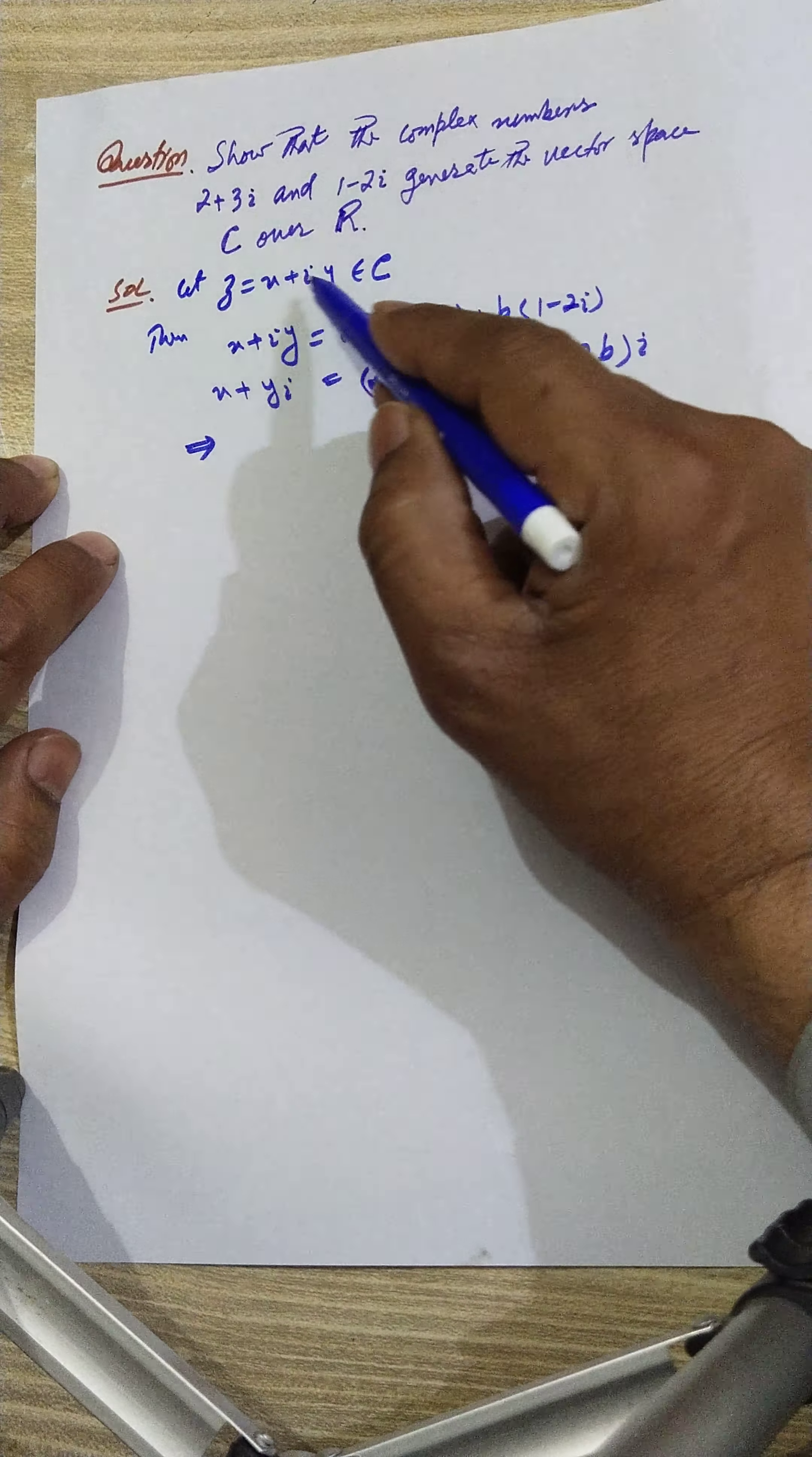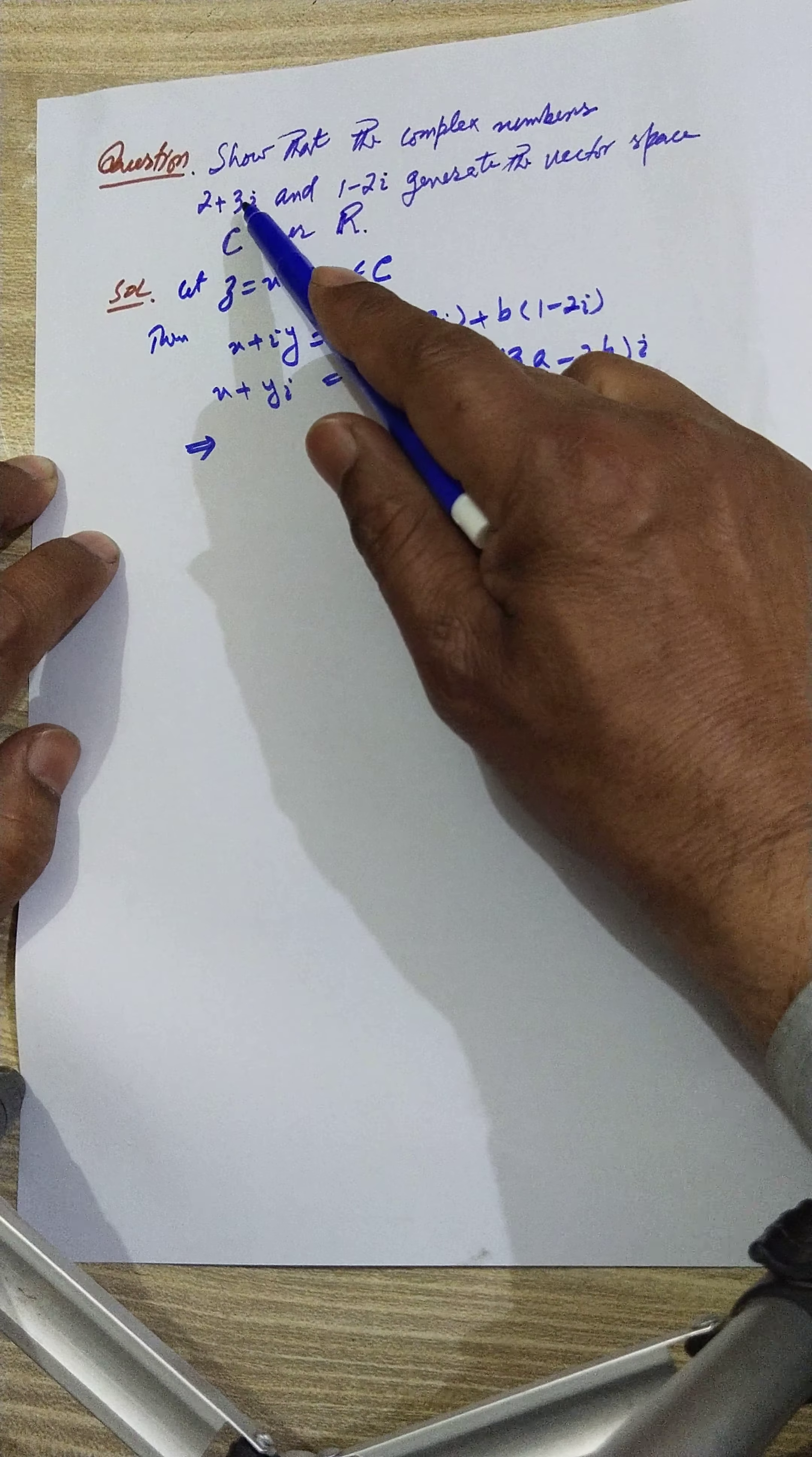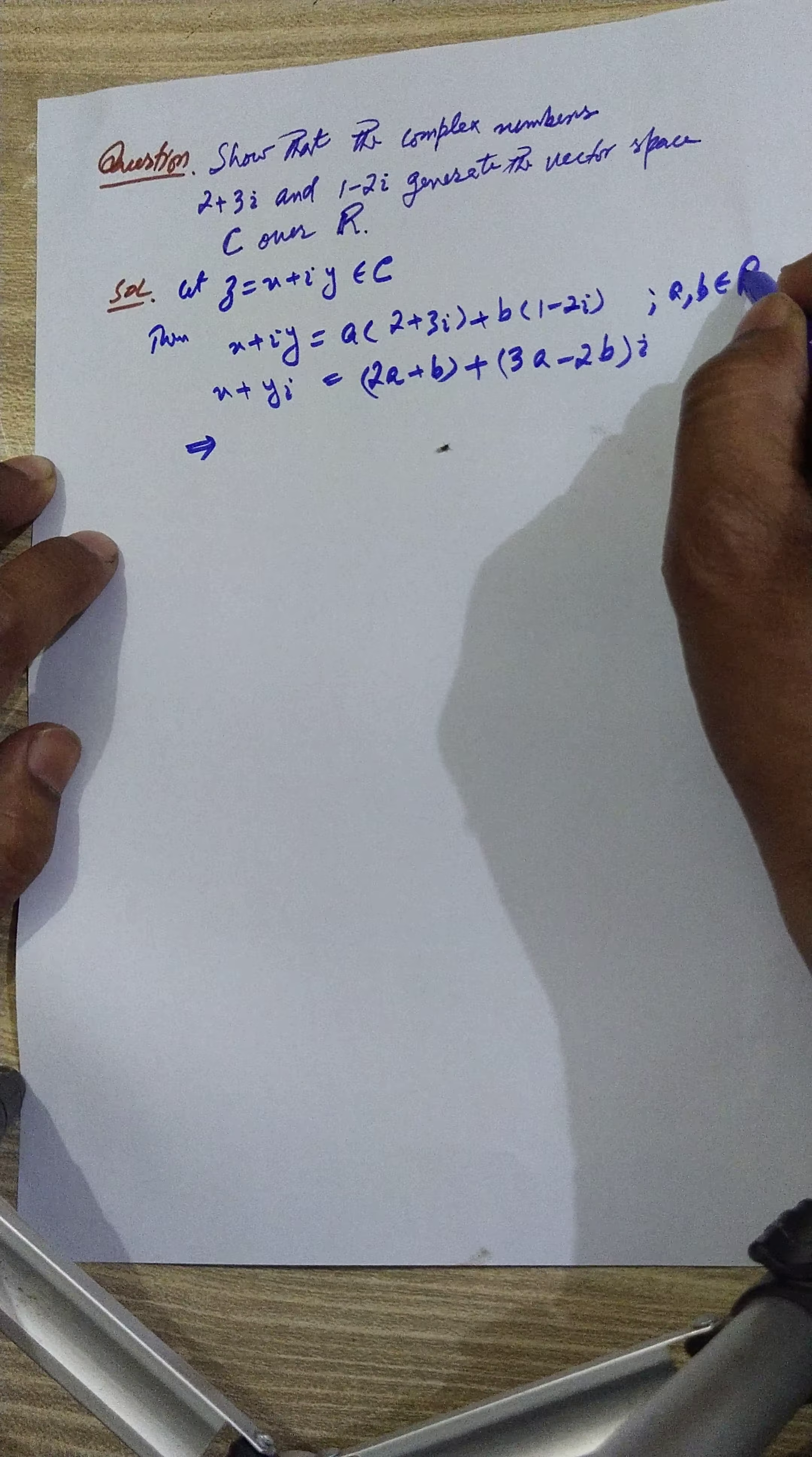This is a very simple question, I'll solve it in front of you. Now from the set of complex numbers C, you take an element x+iy. You have to make a linear combination of these two: x+iy equals a into this complex number plus b into this, where a and b belongs to R.